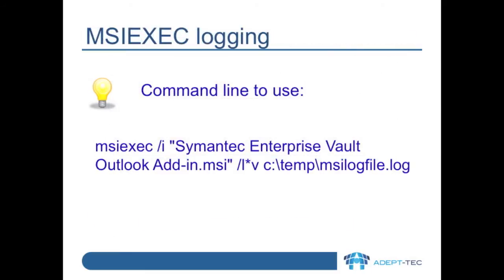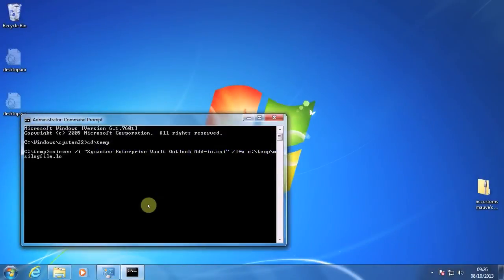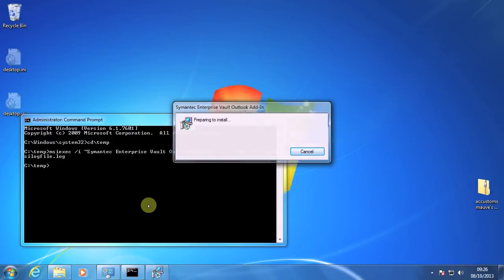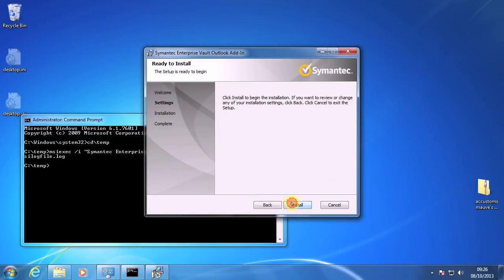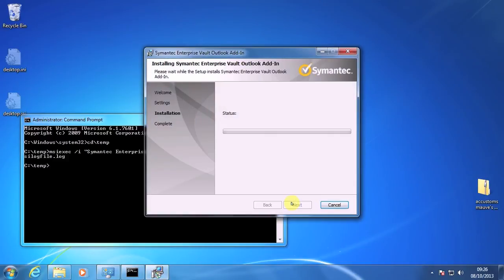Finally, let's talk about MSI exec logging. This is invoked via a specific command line, as we see on this slide. The only thing to change for your environment is the path and the filename for the log file which can be generated. This type of logging is really only used if there's an issue installing or uninstalling the Outlook add-in. When you run the command, the installer will start like normal, but in the background MSI will be creating the log file for you.